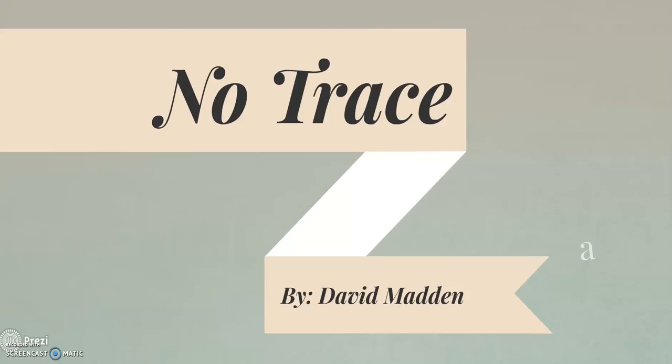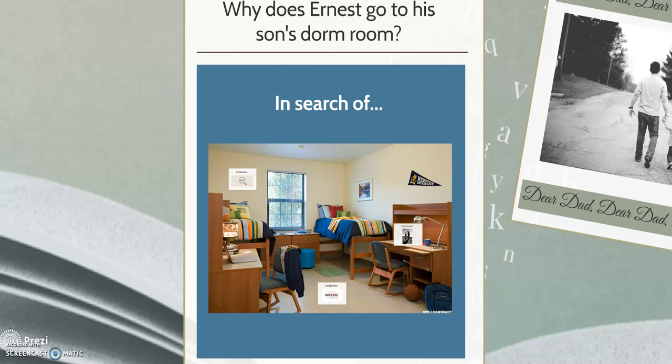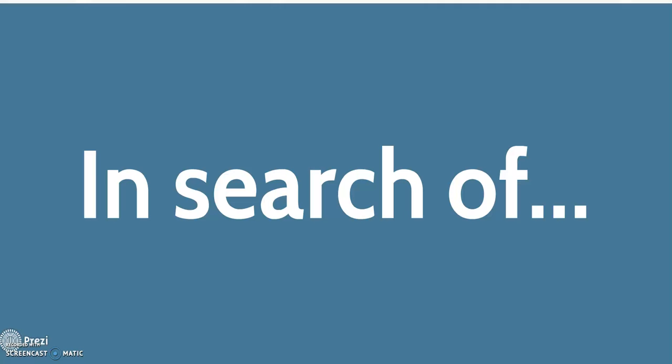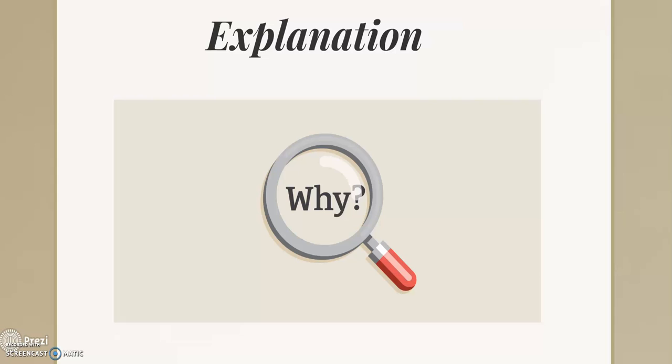The first question is, why does Ernest go to his son's dorm room? I think the simplest explanation is that he was in search of something, and there are three major categories. The first is an explanation. This is the initial reaction of anyone who has gone through a traumatic event — they can't quite comprehend what's happened and try to search for why, wanting a logical reason behind it.